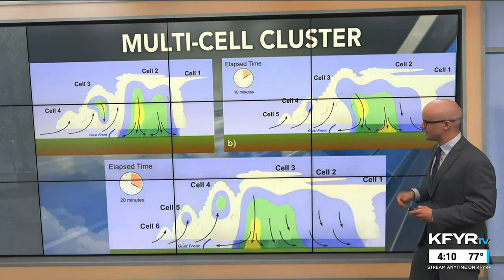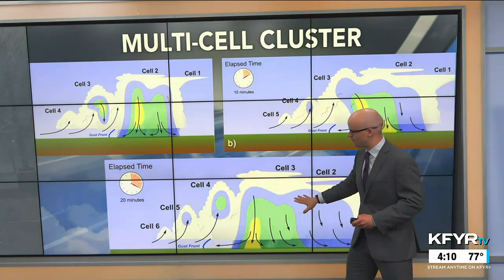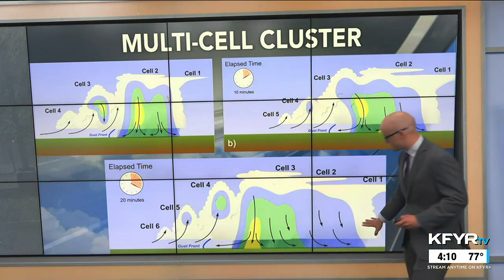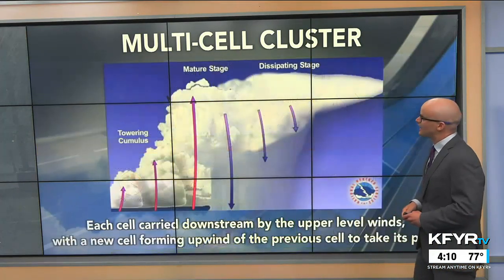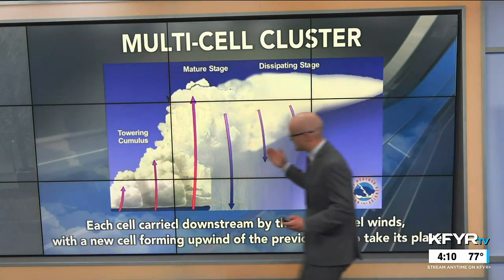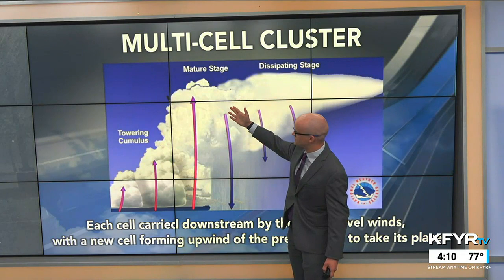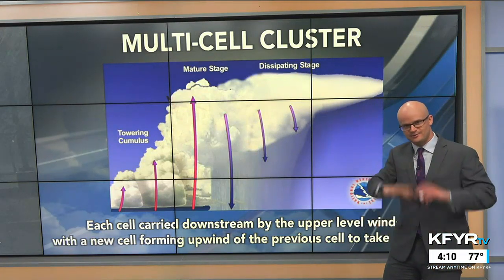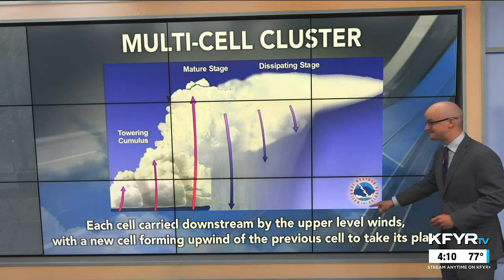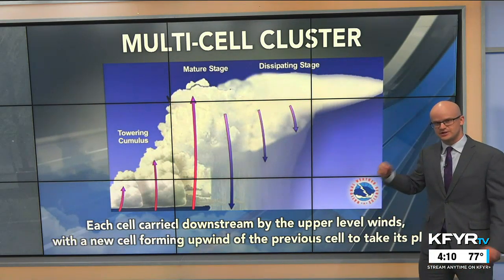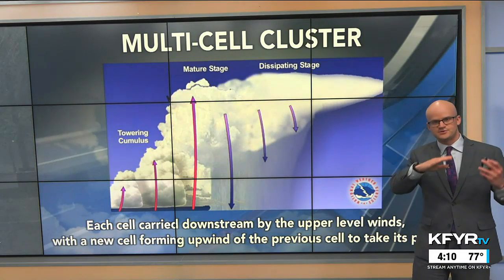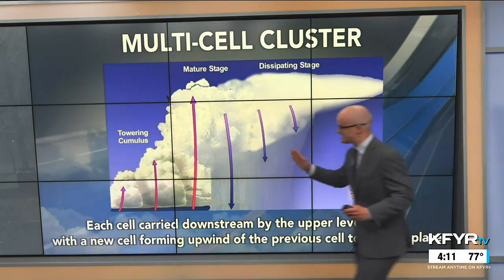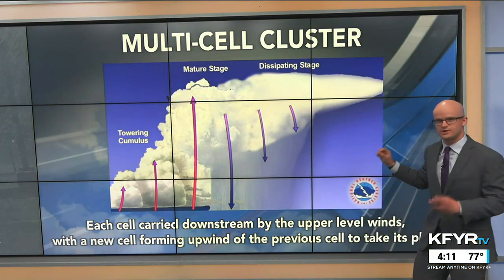These multi-cell storms can produce hail, strong winds, even brief tornadoes, and flash flooding if these storms move over the same areas for a prolonged period of time. Looking at the schematic over a longer period — say 20 minutes — you can see each one of these cells growing and forming new cells behind it as the first ones dissipate. The towering cumulus clouds form cumulonimbus clouds, producing strong thunderstorms, then dissipating as they become downdraft-dominant. Each cell is carried downstream by upper-level winds, so wherever the winds in the upper levels of the atmosphere are moving, that's where these thunderstorm clusters will move.